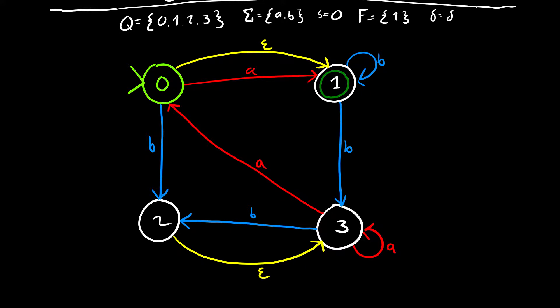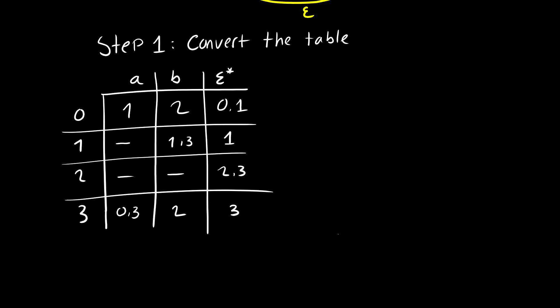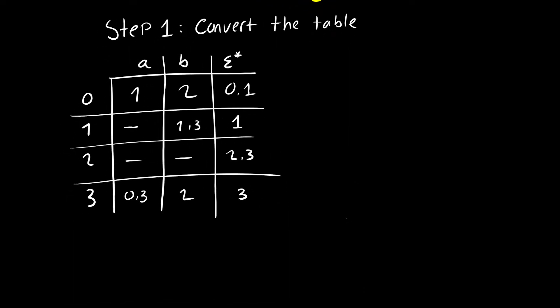Our next step is to make a new table — really just to copy down our already-made transition table and place it side by side with the new table we're going to create from it. Here's that table: we have all of our transitions. Note that on state zero, epsilon goes to itself, but we also have a transition going to one if we have an epsilon. That's what makes it an NFA. To make it a DFA, we need to get rid of epsilon, which means any states that travel via epsilon need to be combined in our new table.